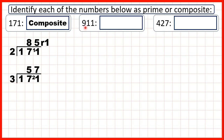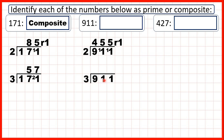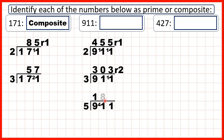Now let's look at 911. We know that this number is an odd number, so it will not be in the 2 times table. If we try dividing by 3, 9 plus 1 plus 1 is 11, and 11 is not in the 3 times table, so we know that dividing by 3 will give us a remainder. The next prime number to try is 5, but all multiples of 5 end in a 0 or a 5, so again we know we're going to get a remainder. So finally, to see if 911 is a prime number, we need to divide it by 7. If we get a remainder for this number as well, we'll know that we have a prime number.